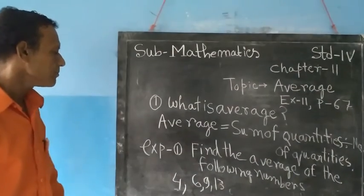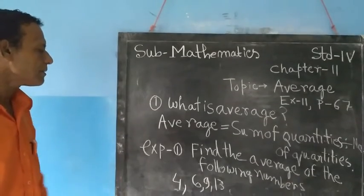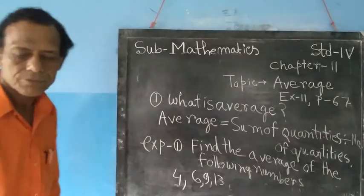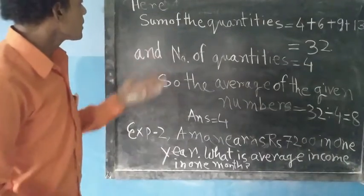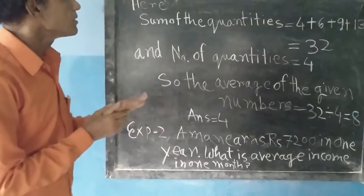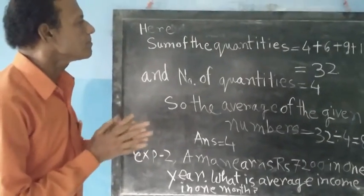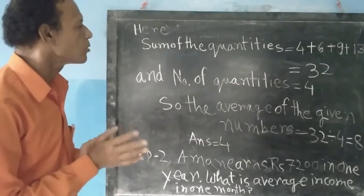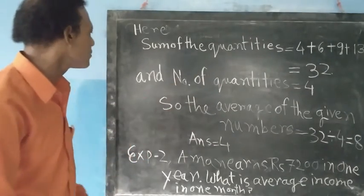Let's look at an example with the numbers 4, 6, 9, and 13. Here, the sum of the quantities is 4 plus 6 plus 9 plus 13, which equals 32.